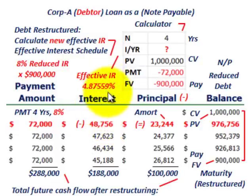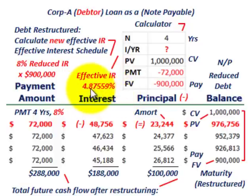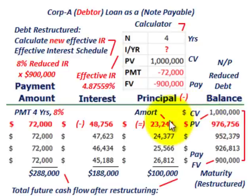Based on amortizing from $1,000,000 to $900,000 with interest payments at 8%, we get the new effective interest rate. Starting with the $1,000,000 carrying value times 4.87559%, the effective interest for year one is $48,756. The amortized amount is the difference between the cash payment of $72,000 and the effective payment of $48,756, which equals $23,244. Subtracting from $1,000,000 gives a new carrying amount of $976,756.